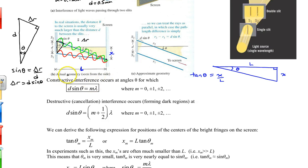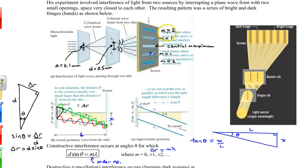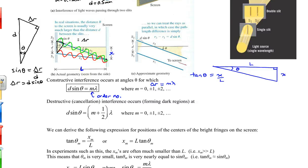For constructive interference, the path difference delta R must equal whole integer multiples of the wavelength. Since delta R equals D sin theta, we get D sin theta = m lambda, where m is the order number — first order, second order, and so on. For destructive interference, the path difference must be off by a multiple of a half wavelength, so delta R equals (m + 1/2) lambda, giving D sin theta = (m + 1/2) lambda.